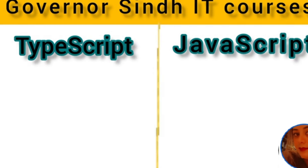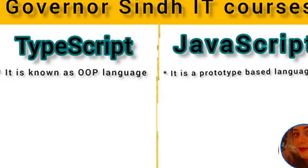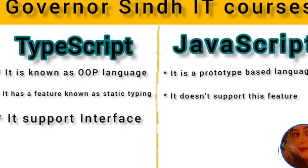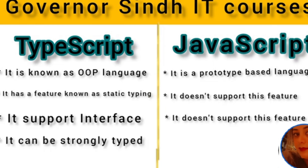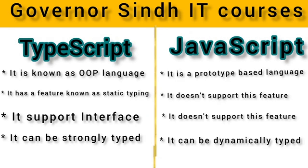JavaScript is a prototype-based or scripting language, while TypeScript is known as an object-oriented programming language. TypeScript has a feature known as static typing, but JavaScript does not support this. TypeScript supports interfaces, but JavaScript does not. TypeScript can be strongly typed, while JavaScript can be dynamically typed. We can create small applications from JavaScript, but when we need to create large and complex applications and websites, we use TypeScript.